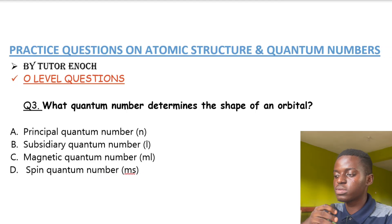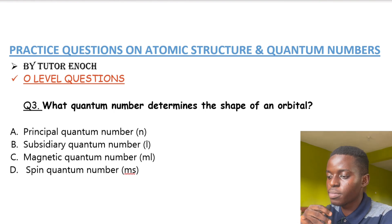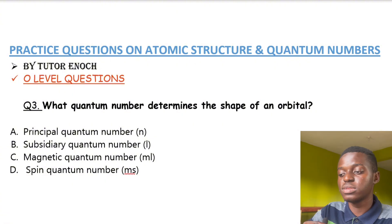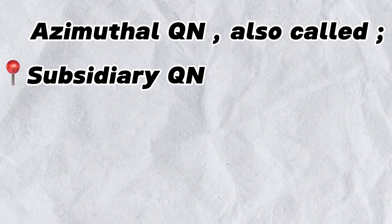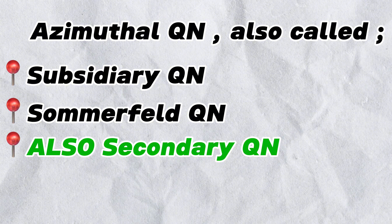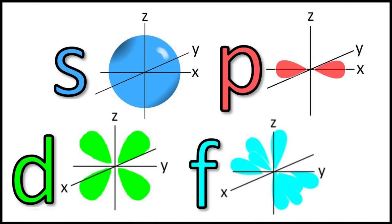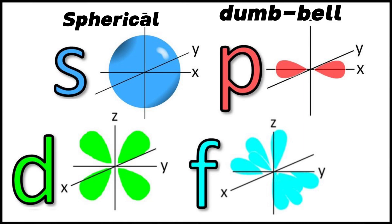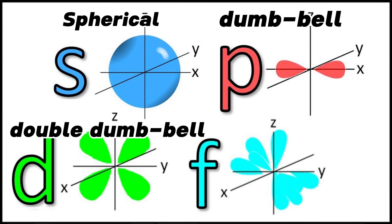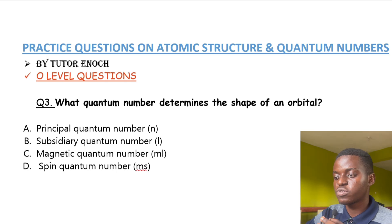Question three asks: what quantum number determines the shape of an orbital? Options are: A — principal quantum number, B — subsidiary, C — magnetic, and D — spin. I gave you the acronym PAMS. Note that azimuthal, subsidiary, and Sommerfeld all refer to the same quantum number. The azimuthal or subsidiary quantum number tells us the shape of orbitals: s is spherical, p is dumbbell, d is double dumbbell, and f is complex in shape.